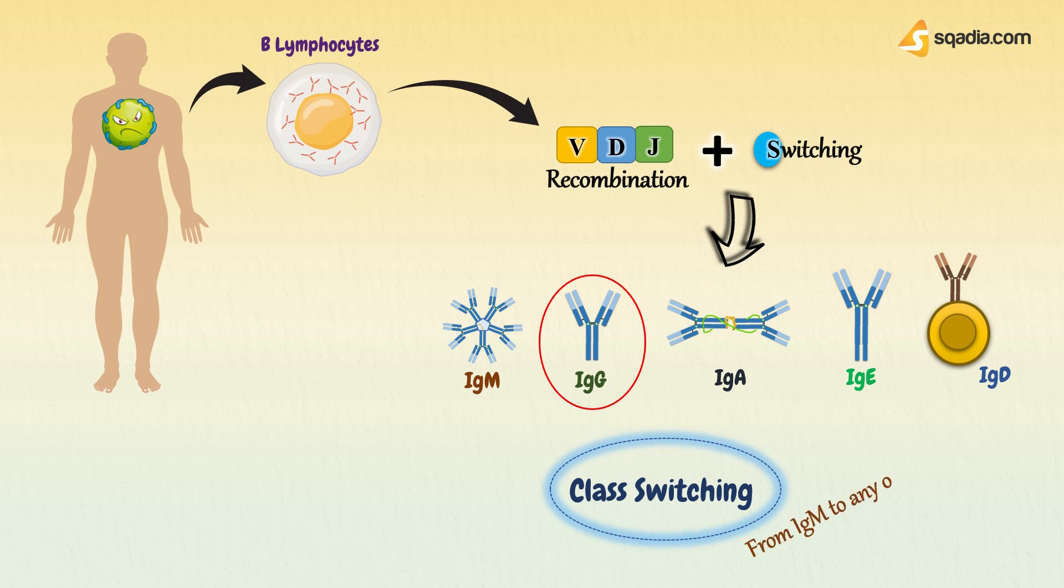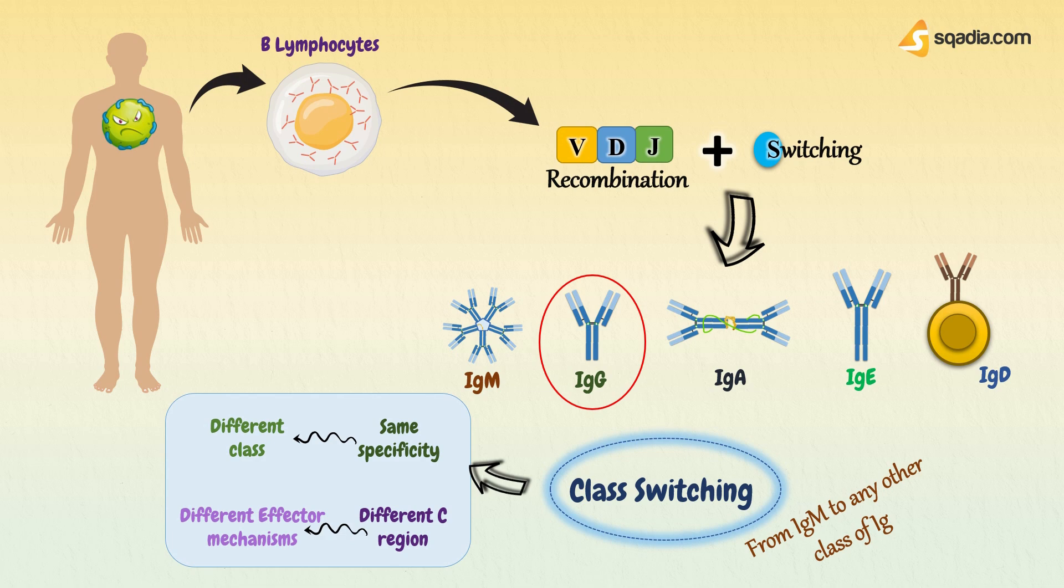As during this process, an activated B cell changes its antibody production from IgM to any other class of immunoglobulins. So class switch recombination events allow the same antibody specificity, that is concerned with variable regions, to be associated with different antibody classes and subclasses. And as it produces different constant regions, it also initiates different effector mechanisms against that foreign antigen.